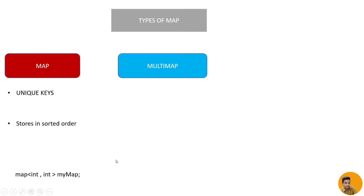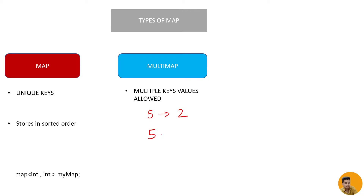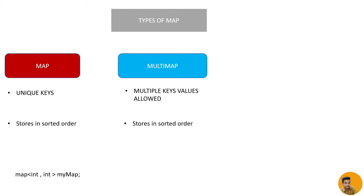Then comes the multimap. As mentioned for the regular map, we have unique keys. In a multimap, multiple key-value pairs are allowed — that means if you have a key 5 mapped to 2, you can also have another key 5 pointing to a different value, say 1. So multiple keys are allowed here. It is also stored in sorted order, and this is how we declare our multimap.